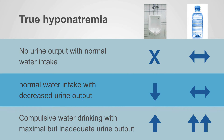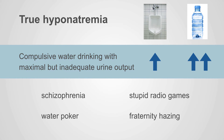Next, compulsive water drinking with maximal but inadequate urine output. These are tragic situations in which people just have compulsive water drinking. People with schizophrenia are predisposed to this — it may be in some degree due to the anticholinergic drugs they take, which increase thirst.